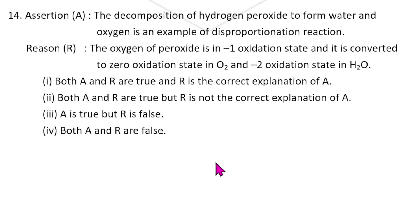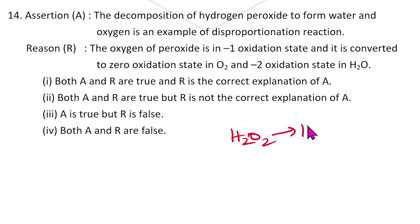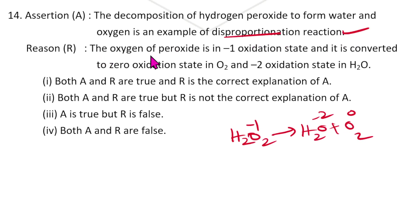Last question: Decomposition of hydrogen peroxide to form water and oxygen is an example of a disproportionation reaction — correct. H₂O₂ gives H₂O and O₂. Oxygen in H₂O₂ is −1; it becomes −2 in H₂O and 0 in O₂. So it is definitely disproportionation. Oxygen of peroxide in −1 oxidation state converts to 0 (in O₂) and −2 (in H₂O). So the answer is A.